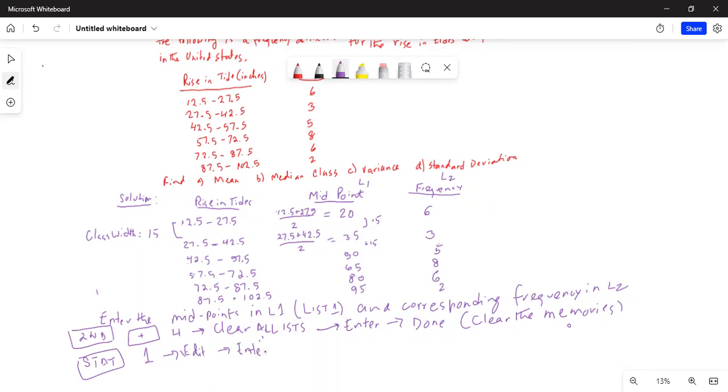Enter midpoints in L1. The first midpoint is 20, next one is 35, next one is 50, next one is 65, next one is 80, next one is 95.